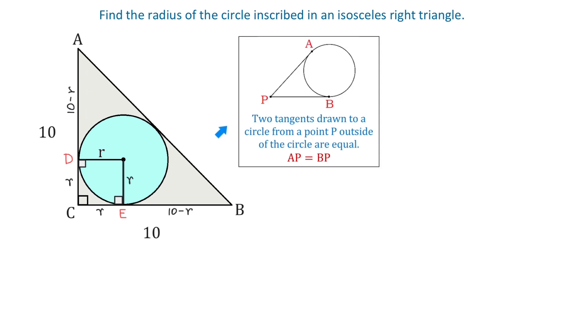Now, let's use the following theorem. Here we have a circle and a point outside the circle. Then, if from this point we draw two tangents to the circle, then these line segments will be equal. So, AP equals BP.